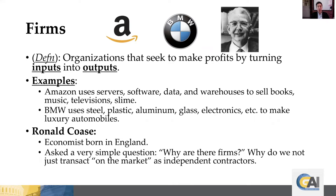Take something as complicated as Amazon — they use servers, software, data, and warehouses to sell books, music, television, slime, which my girls love. BMW takes steel, plastic, and aluminum to make luxury automobiles. Inputs to outputs. The idea of what is a firm is a huge topic and a big part of industrial organization, which is a branch of economics that looks at firms and how they compete and interact. Ronald Coase asked a very important question: why are there firms? A deeper dive will give richer predictions, but this definition will get us a long ways.